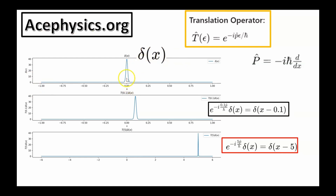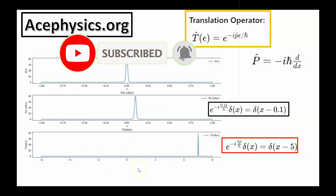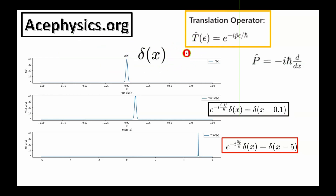This is delta of x. If I apply the translation operator e to the minus i p epsilon over h-bar onto delta of x, and replace epsilon with 0.1, that moves the Dirac delta function from 0 to 0.1. This is why we call it the generator of position translation. If I take e to the minus i 5p over h-bar onto delta of x, that's equal to delta of x minus 5. Notice the scale is different, so don't get confused. The most important thing is that this translation operator causes the function to shift one way or the other, and this is how it's used to model systems in quantum mechanics.